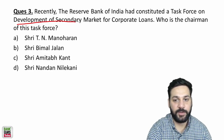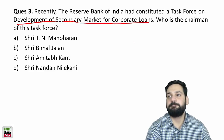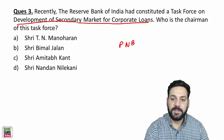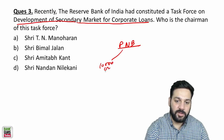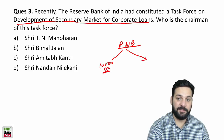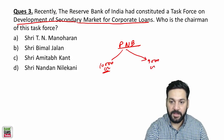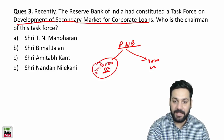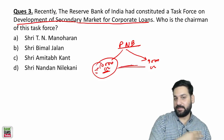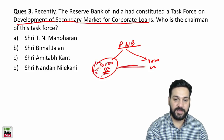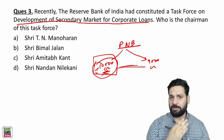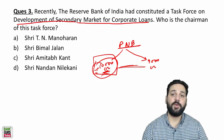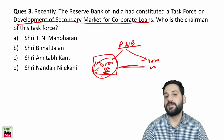For example, PNB gave loans of 10,000 crore to corporates and has current liabilities of around 9,000 crores. Those borrowers are not paying on time and have gone NPA. PNB wants to sell this loan asset to match current assets with liabilities, but there is no proper secondary market for selling such corporate loans — that is why RBI constituted this task force.